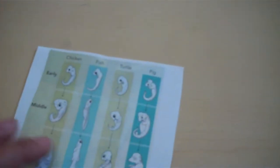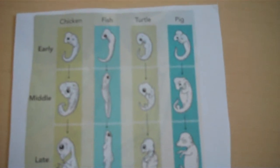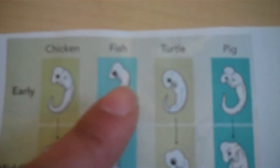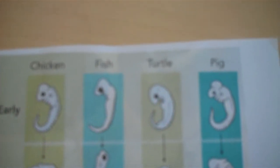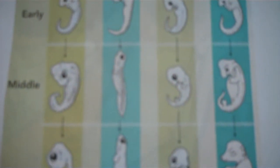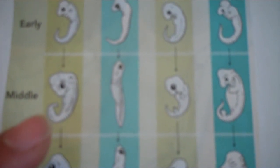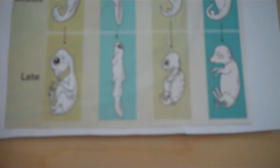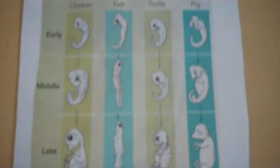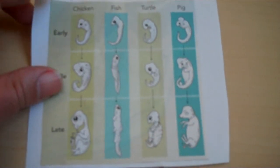Here's another piece of evidence. This is an example from your textbook of early development. Here is the chicken, a fish, a turtle, and a pig. You can see how they're very similar early on in development. As we go further along, they start to look different from each other, and finally we can see the differences as they're growing. This is an example of how they might have a common ancestor.